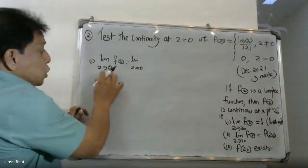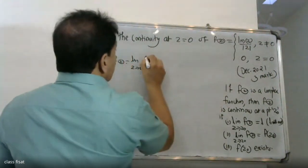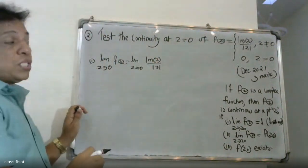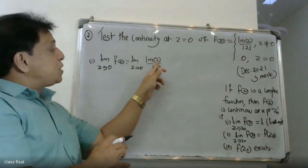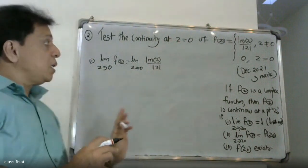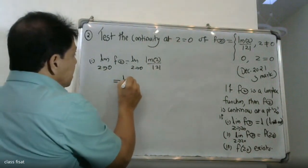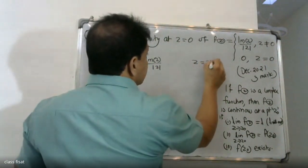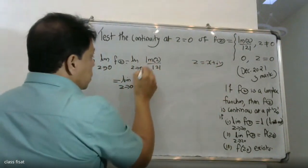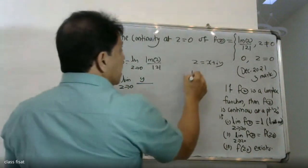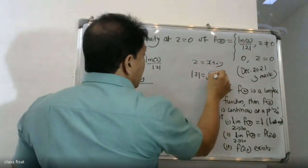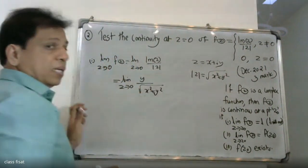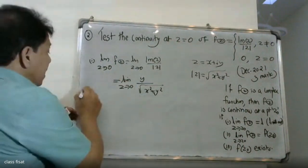The limit as z tends to zero of f of z is equal to the limit as z tends to zero of the imaginary part of z divided by modulus of z. Writing z as x plus iy, the imaginary part is y and the modulus is the square root of x squared plus y squared. So this becomes the limit as z tends to zero of y divided by the square root of x squared plus y squared.